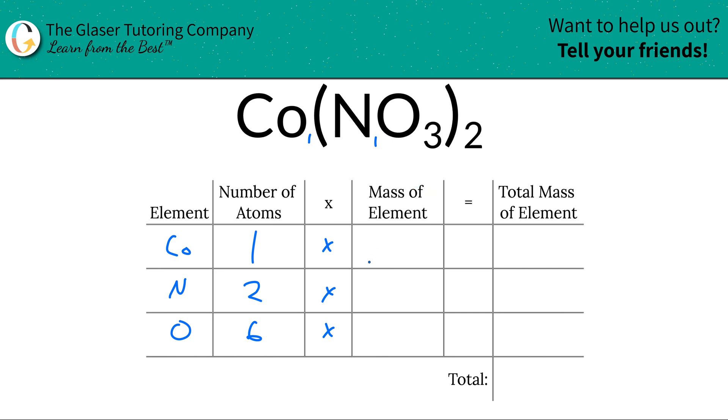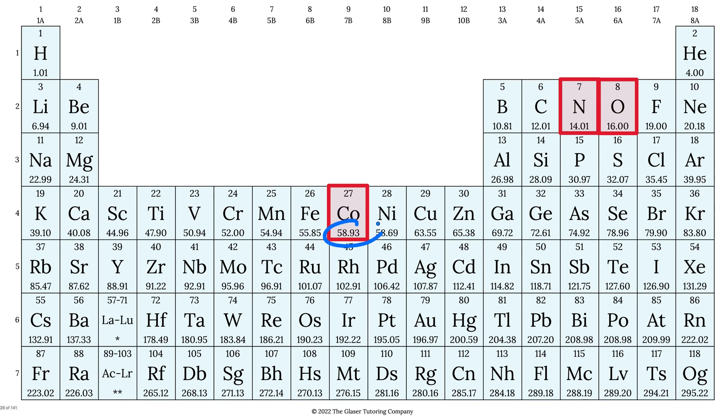Now what you would do is look up the mass of each element. Periodic table, right? So let's take a look. We got cobalt here, 58.93, nitrogen and oxygen's masses accordingly. Now the masses here are in grams per mole or AMU, depending upon whether you're talking about molar mass or molecular mass. So let's write these masses down.